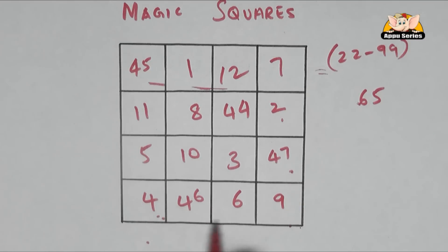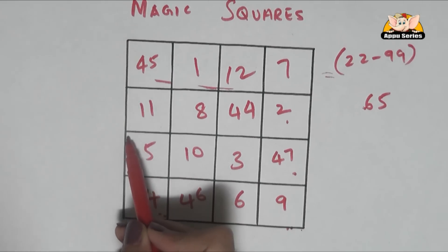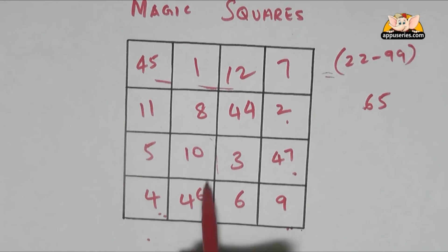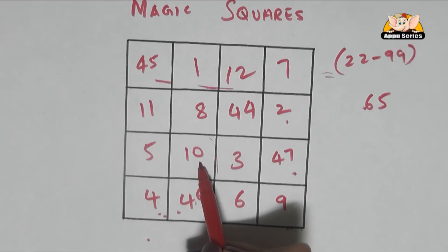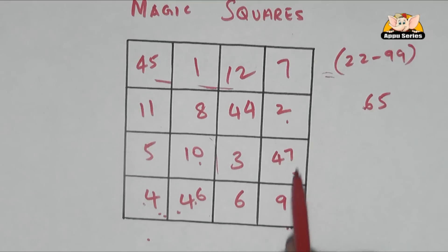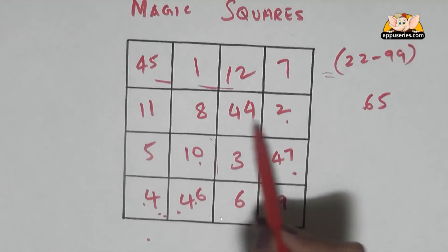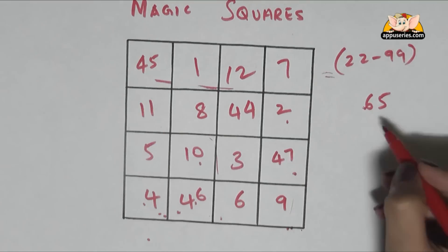When you sum up these numbers, when you count this section you will get 65. 46 plus 10 is 56, plus 9, 65. You count up these four or these four or these four, your answer will be 65.